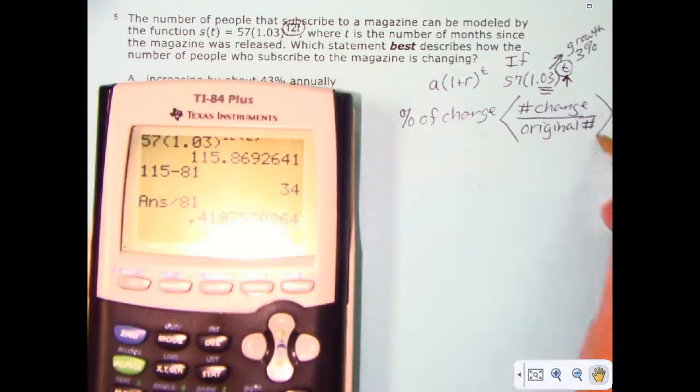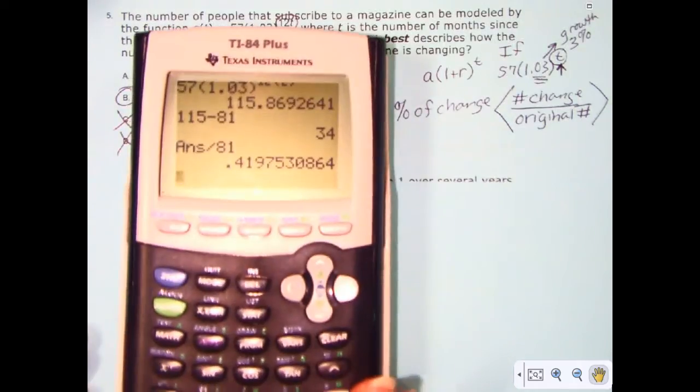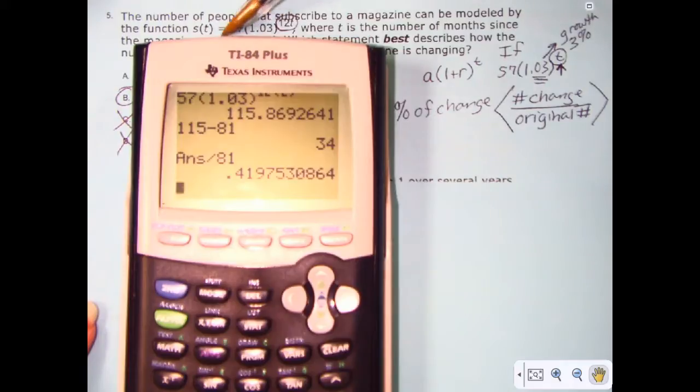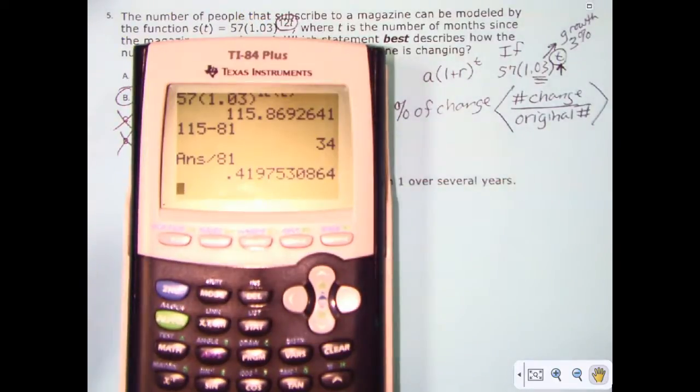The number of the change divided by the original amount. So you might think, well Ms. Wiles, can I just use the first number that we have? Can I use this 57, where at the beginning, when we start, we have 57, and then at the end of the first month, we have 81? Well, we should be able to.